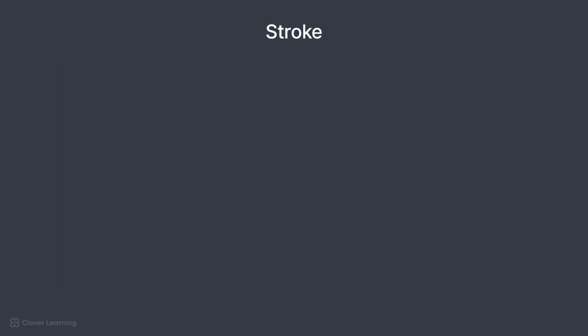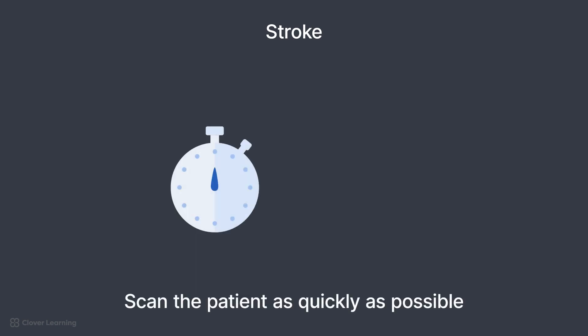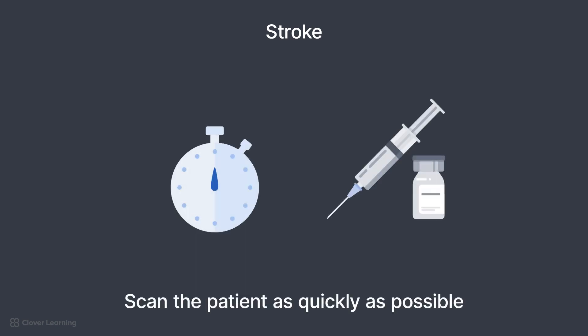Another common pathology for a brain study is a stroke. If a patient has an indication of early stroke, it is important to scan them as quickly as possible. Some medications used to treat strokes, such as clot-dissolving drugs, are only effective in the first few hours of the stroke. Therefore, any delay in scanning is a delay that may affect treatment.